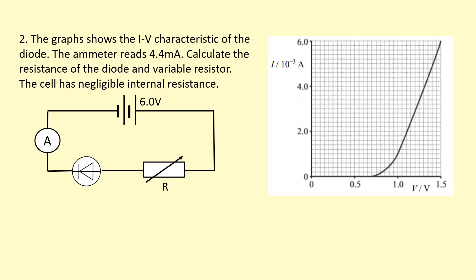The graph shows the IV characteristics of the diode. The ammeter reads 4.4 milliamps. Calculate the resistance of the diode and the variable resistor. The cell has negligible internal resistance. So we're trying to find the resistance of the diode and the resistance of the variable resistor. The current through the ammeter is 4.4 times 10 to the minus 3 amps. Because this is the positive end and this is the negative end and current is flowing clockwise. And the diode is connected the right way around, so it will let current flow through. Because this is a series circuit, the current through the diode and current through the variable resistor will be the same. It's going to be 4.4 times 10 to the minus 3 amps.